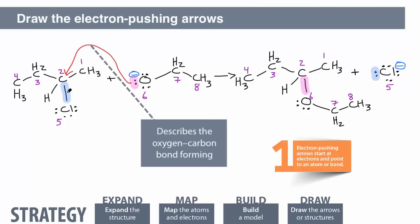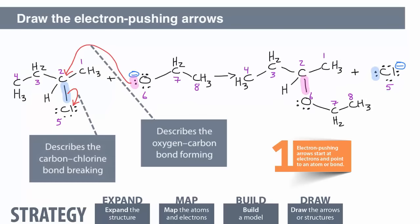Start a new arrow between the carbon and chlorine atoms and point the arrow to the chlorine. This shows that the electrons from the carbon-chlorine bond go to the chlorine atom.